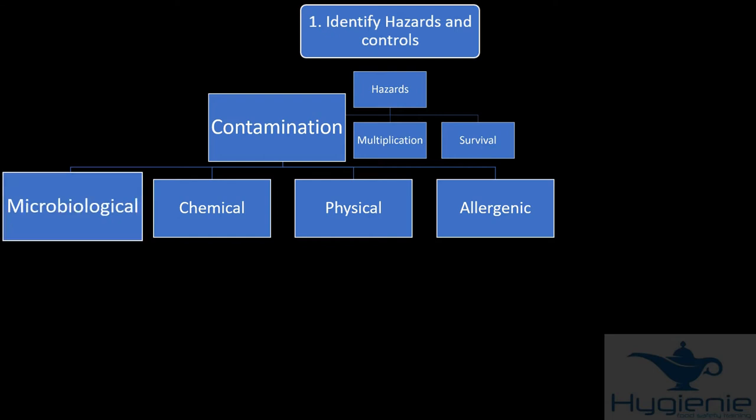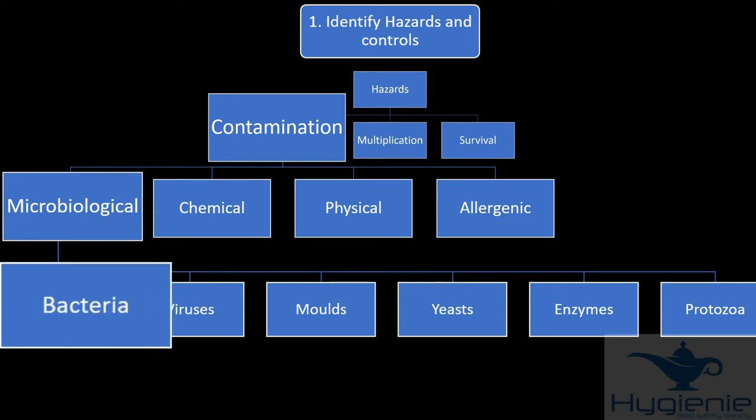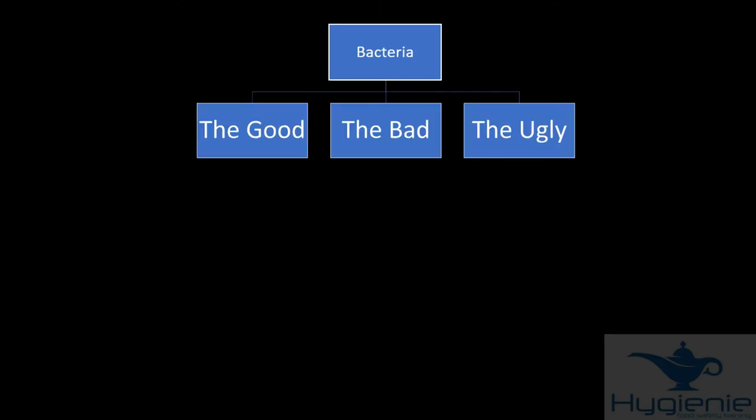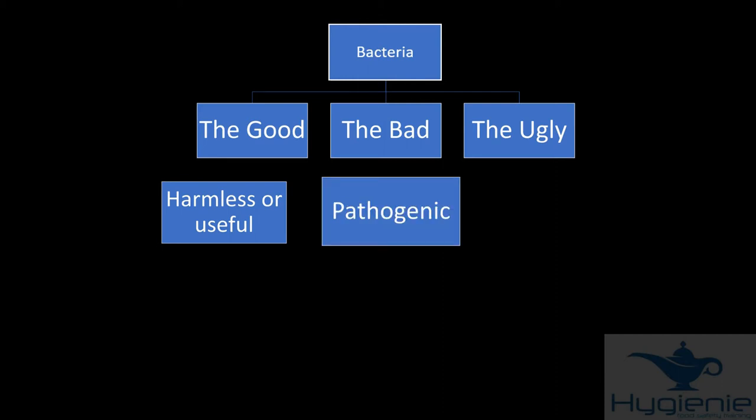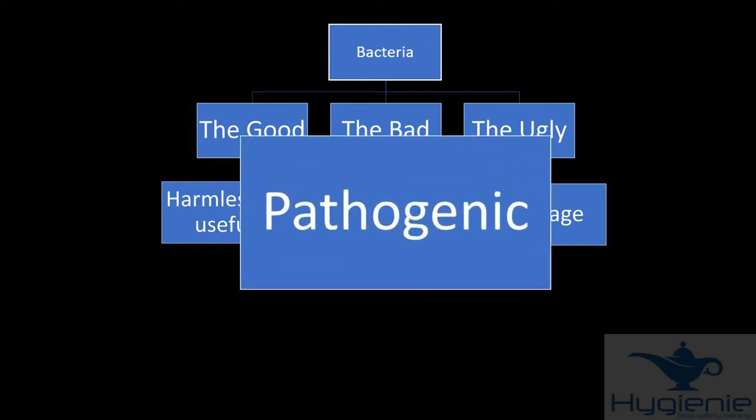We'll focus on microbiological. Examples include bacteria, viruses, moulds, yeast, enzymes and protozoa. We're going to focus on bacteria. There are essentially three different types of bacteria. We can think of them as the good, the bad and the ugly. The good are harmless or useful bacteria. Bad are the pathogenic. And ugly are the spoilage bacteria that make food go off. We'll focus on the bad ones. Pathogenic bacteria that can make you ill.